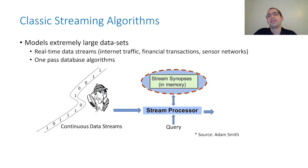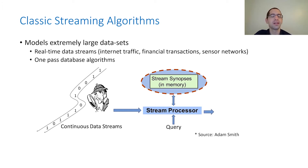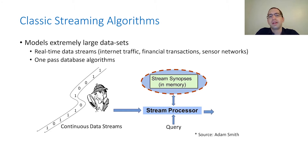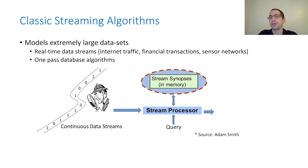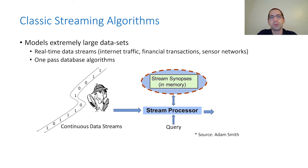Let me start by introducing classical streaming algorithms. These are algorithms useful for analyzing and processing very large datasets. For example, a network router that receives millions of packets per second needs to optimize internet traffic, or a Google database that communicates with users who can send or receive data and ask queries.